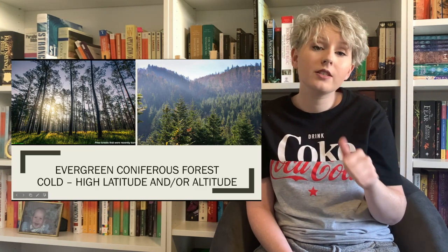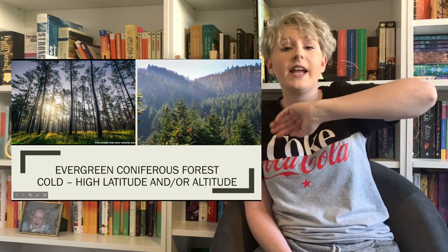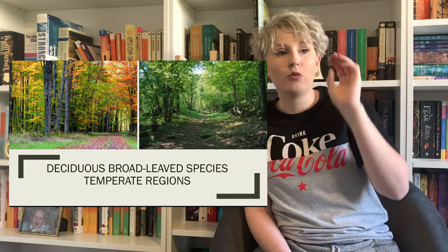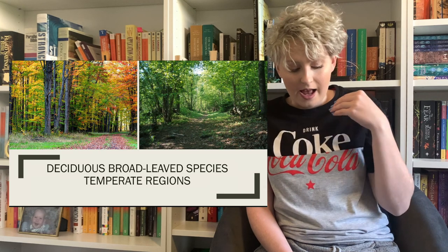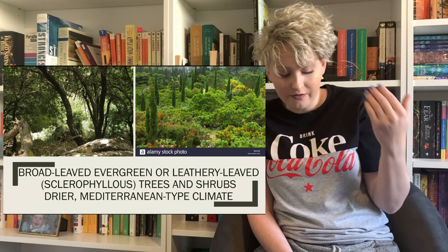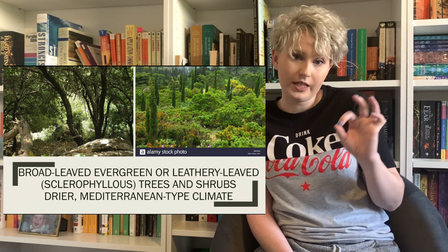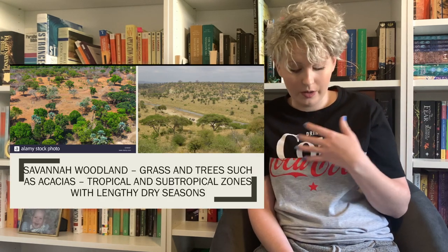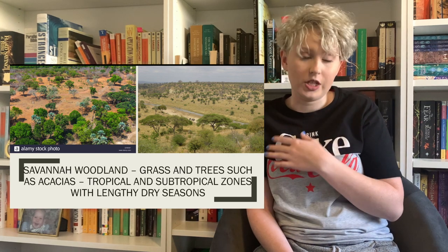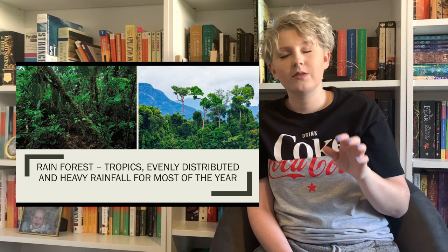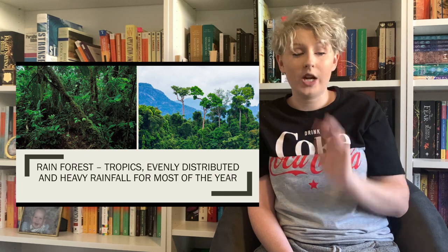We have evergreen coniferous forests located in high northern and high altitude places. We have deciduous broad-leaved forests in more temperate regions. We have Mediterranean-type climates with broad-leaved, evergreen, or leathery-leaved trees and shrubs. Then in tropical and subtropical areas you can have savannah woodland — grasses and trees such as acacias. And in the tropics proper, you have rainforests, though there's a whole chapter later in the book dedicated to rainforest plants. Woodland has less diversity and less plant life.